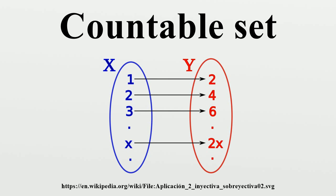What about sets that seem naturally larger than N? For instance, Z the set of all integers, or Q the set of all rational numbers, which intuitively may seem much bigger than N. But looks can be deceiving, for we assert: Theorem — Z and Q are countable. In a similar manner, the set of algebraic numbers is countable. These facts follow easily from a result that many find non-intuitive. Theorem: Any finite union of countable sets is countable. Furthermore, the union of countably many countable sets is countable.